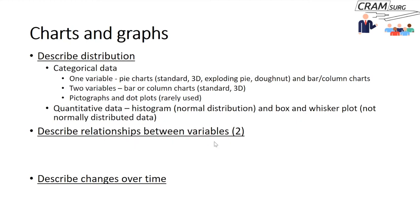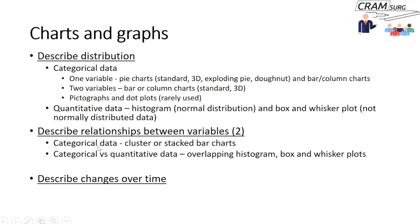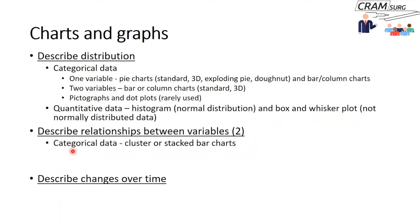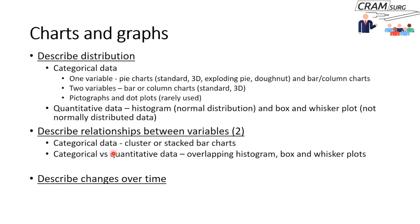If you have two or more variables and want to describe relationships, again consider the data type. If both variables are categorical, use a clustered or stacked bar chart. If one variable is categorical and the other is quantitative, use either an overlapping histogram for normally distributed data, or box and whisker plots for non-normally distributed data. If both variables are quantitative, most people would use a scatter plot.